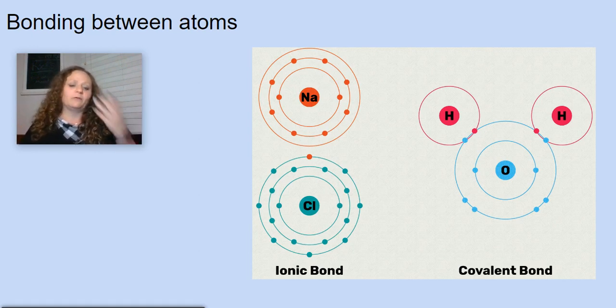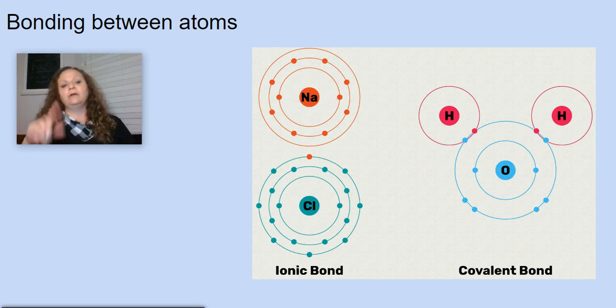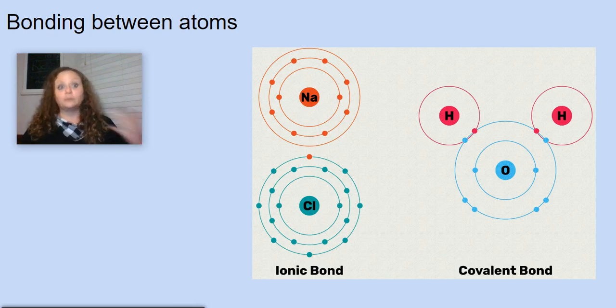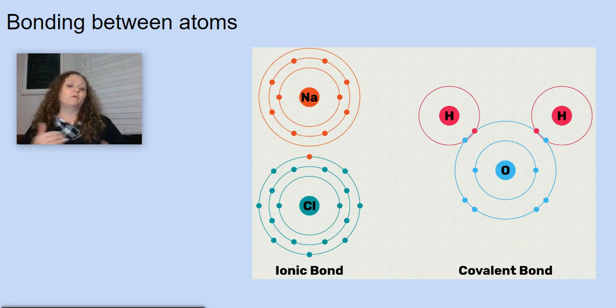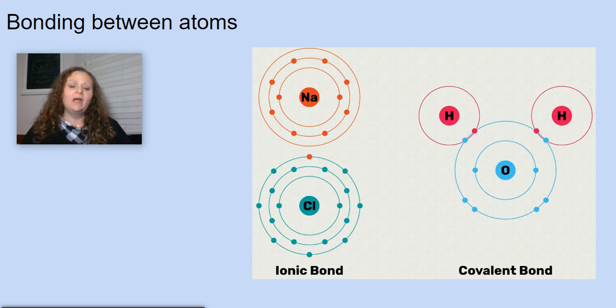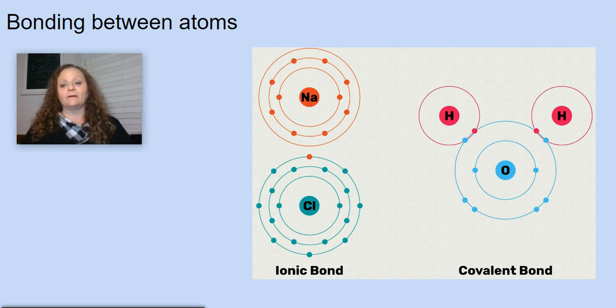But by donating that one electron to chlorine that has space for one additional electron in its outer shell, it actually makes both atoms more stable. And so in this way, they form a bond and this type of bond is called an ionic bond. Ionic bonds just mean that one atom is going to donate an electron to the other atom.